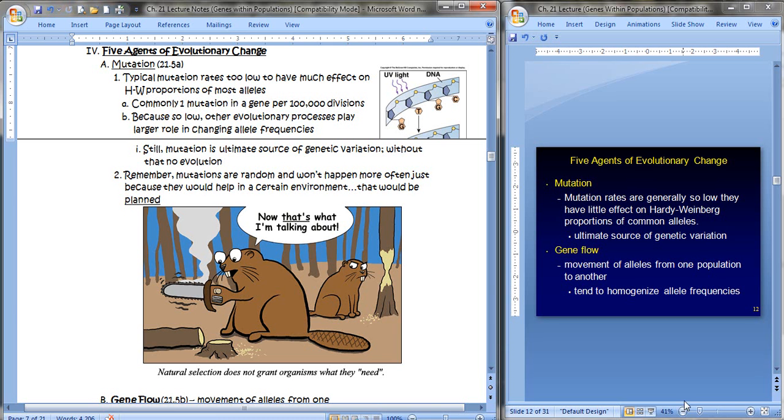We'll begin with mutation. Typical mutation rates are too low to have too much of an effect on Hardy-Weinberg proportions of most alleles. In fact, there's only usually about one mutation in a gene per 1,000 divisions of that gene, so it's pretty low. That means that other evolutionary forces need to play a larger role in changing the allele frequencies. Still, mutation is the ultimate source of genetic variation. Without it, there's no evolution.